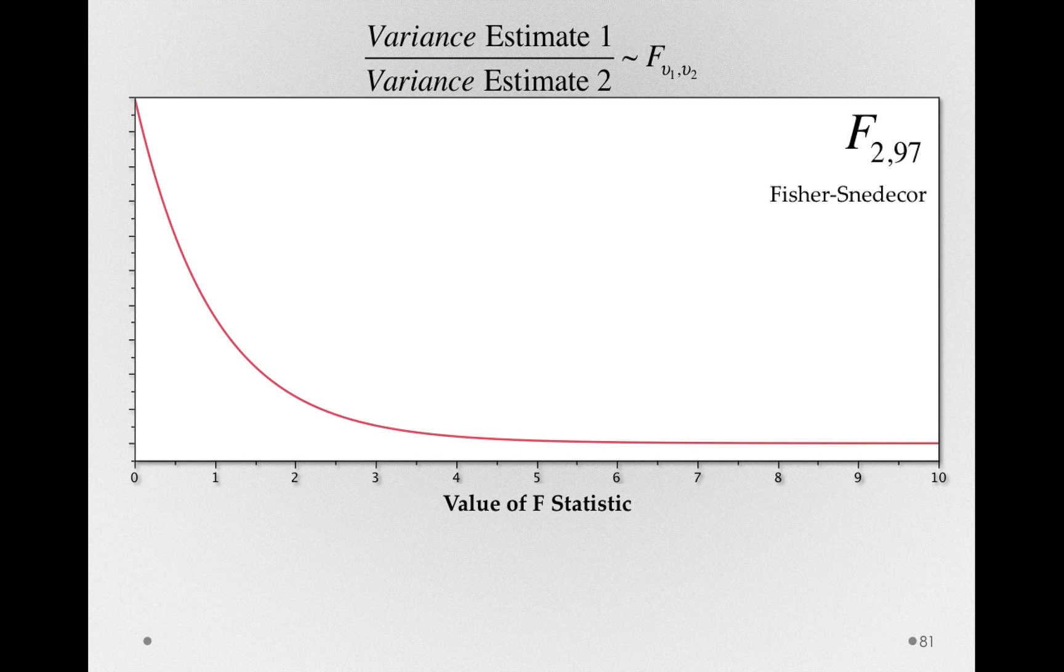Here is the Fischer-Snedecor with two numerator degrees of freedom and 97 denominator degrees of freedom. And this is the distribution of f-statistics we should get if the null hypothesis is true. Said differently, this is the sampling distribution of the f-statistic under the null hypothesis. So if the null hypothesis is true, these are the values of f we should get.